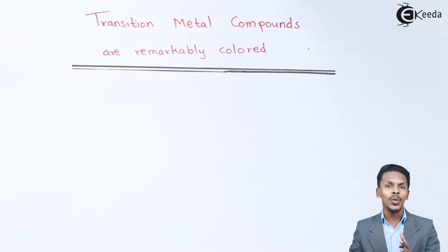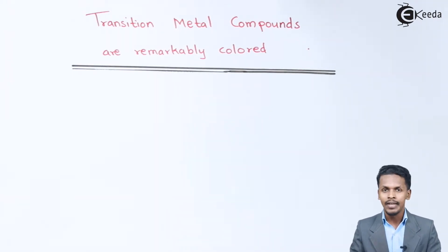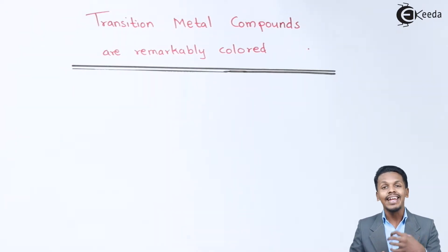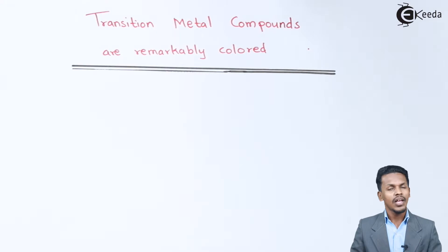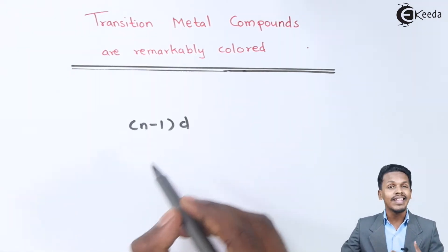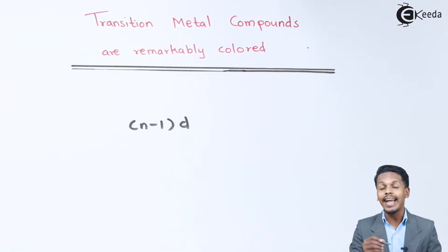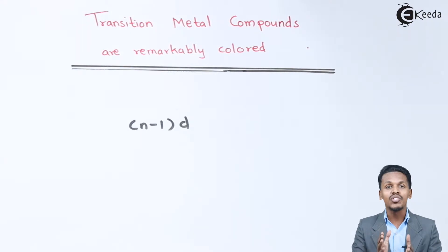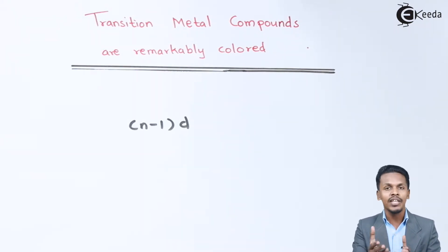In this topic we are going to talk about why transition metal compounds are remarkably colored. A substance is colorful because it absorbs a particular wavelength from the visible region, and that's the reason it gives a particular color. In the case of transition metal compounds, if the transition metal has a partly filled (n-1)d orbital, the d orbitals have a tendency to undergo splitting, which is known as splitting of d orbitals.